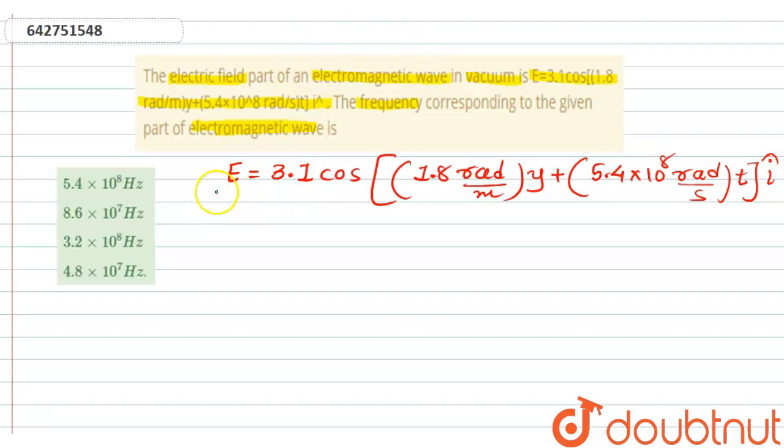Now we have our standard equation: E = E₀ cos(ky + ωt). This is our first equation and this will be our second.